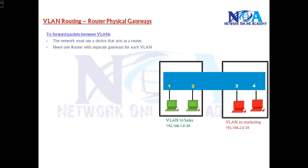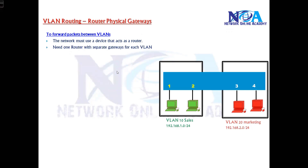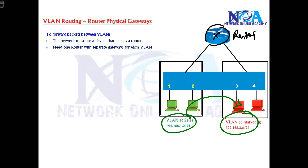Now, in order to forward packets between the WLANs, we need one Layer 3 device — that is, a router or a Layer 3 switch. In this example we'll use a router. A router is needed because logically these two are different networks. Even though they are physically in the same LAN, they are logically separated — like separate LANs, separate networks.